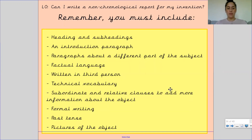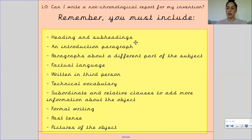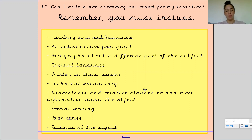These are the things you should have included on your toolkit to write a non-chronological report. Pause the video and have a look, just to remind yourself. You need headings and subheadings, an introduction paragraph, paragraphs about different parts of the subject. Factual language — remember it must be written in third person. Technical vocabulary based on your invention. Subordinate and relative clauses to add more information about the subject. Formal writing, and it must be in the past tense as we're pretending this was an old invention.